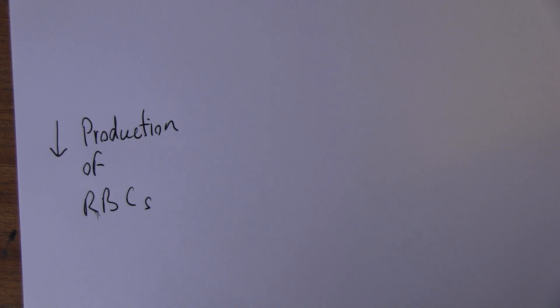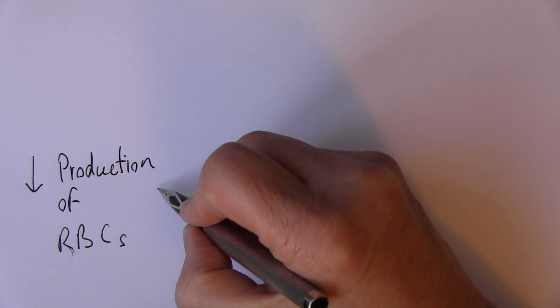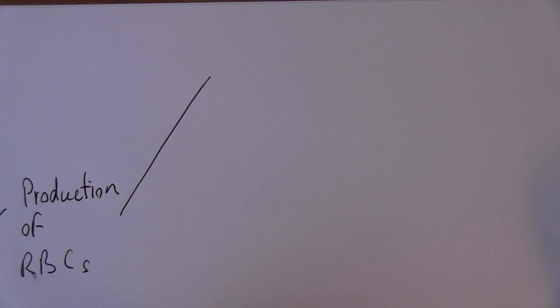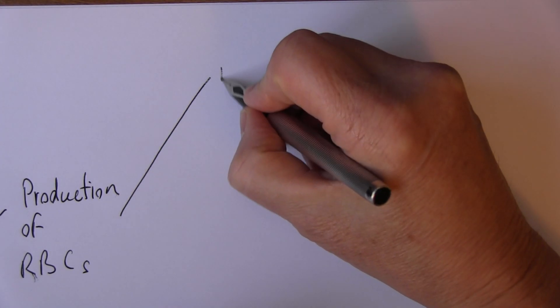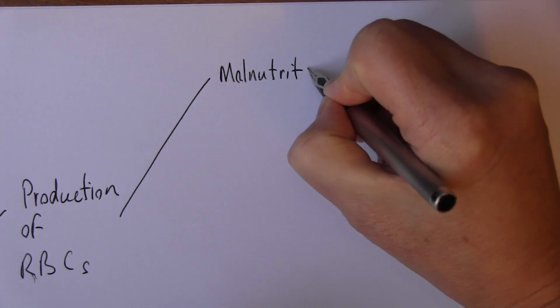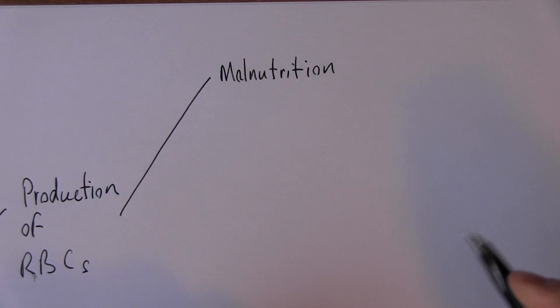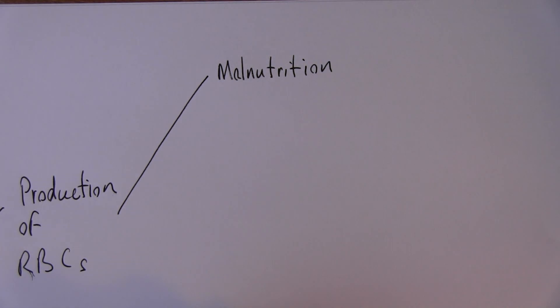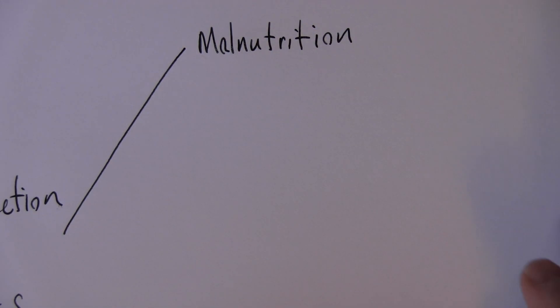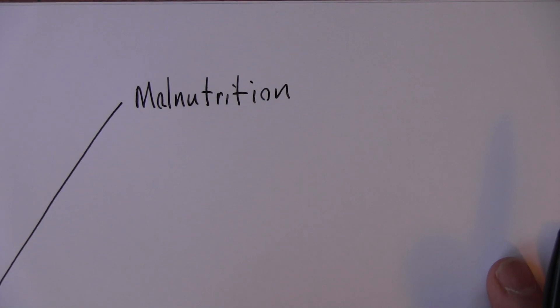I think you can divide this in different ways, but this is the way I found works over teaching many students. Thinking about malnutrition first. Mal means abnormal. Abnormal nutrition. In this case, not enough of particular nutrients. So malnutrition as a cause.